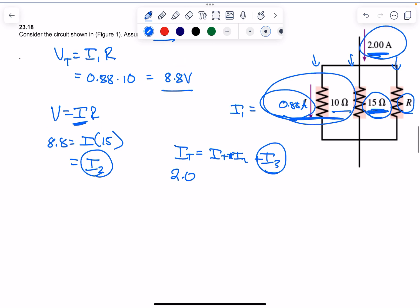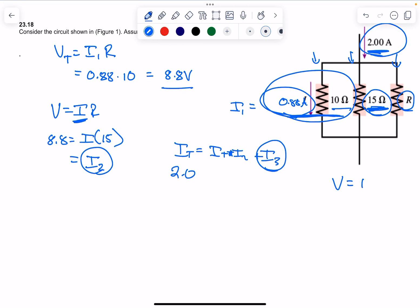Once you know I3, you know the voltage equals IR. The I3, you're going to plug in here, and the voltage is 8.8.